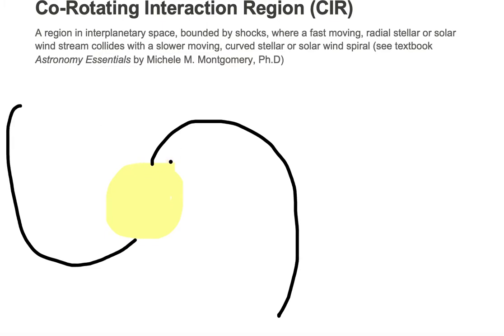The solar wind comes out of these coronal holes — it could be anywhere on the Sun; I just happened to draw two. And there is a fast-moving event, a fast-moving solar wind — maybe there's a flare or some kind of event that causes this fast-moving solar wind coming out of the Sun.